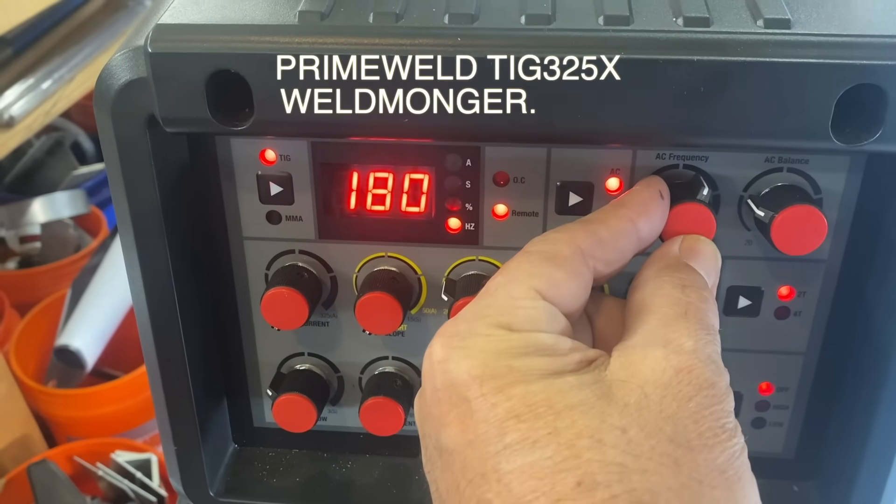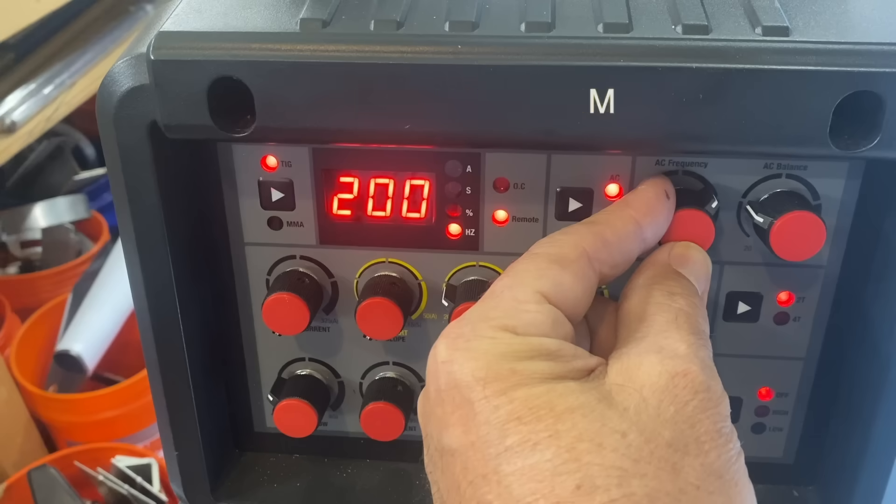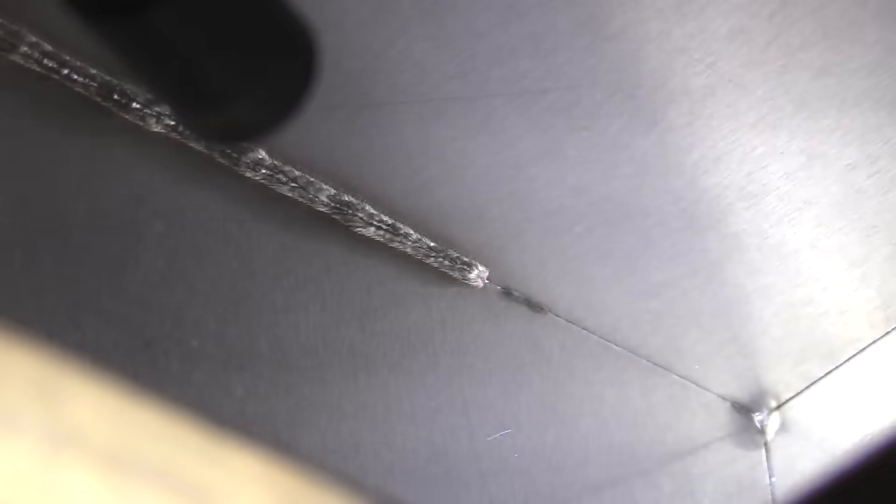I'm going to 200 Hertz now for an outside corner joint on some 50 thousandths thick material. Again I'm using that Alley 5 clear cup. You can see it's lighting things up pretty well all around the bead. There's the penetration side.